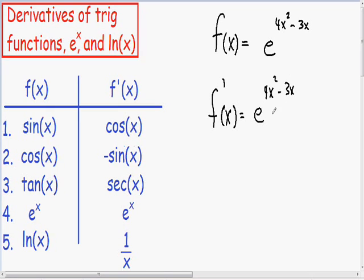in order to finish this derivative, we need to multiply by the derivative of the exponent. Since we have an exponent of 4x squared minus 3x, we need to multiply by the derivative of that, which is just 8x minus 3.